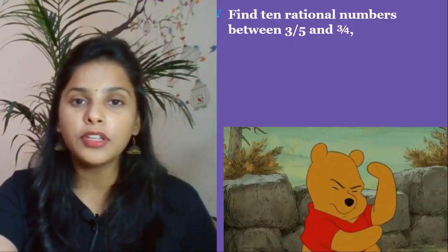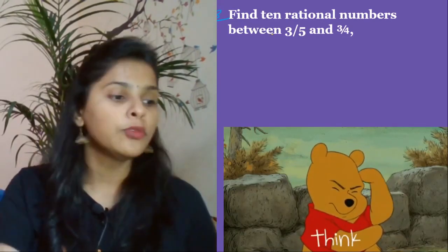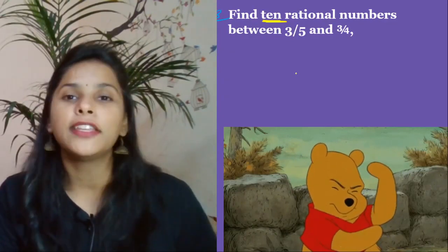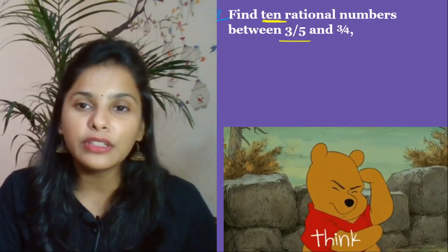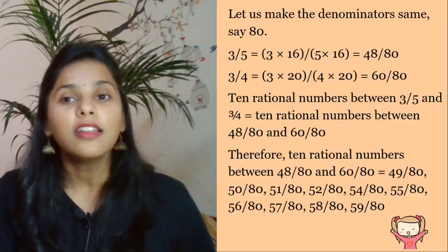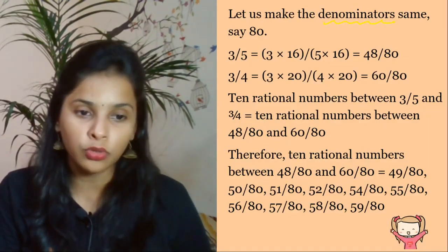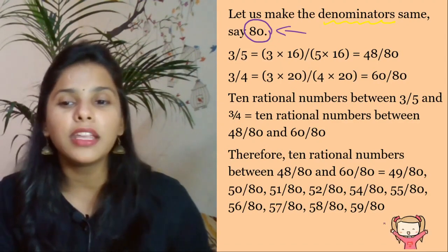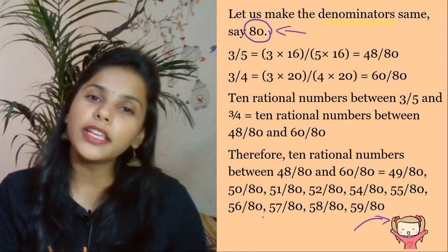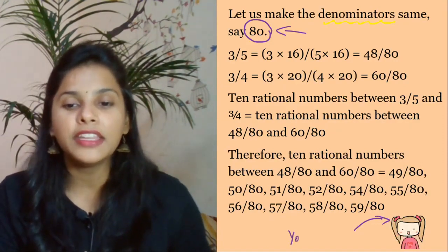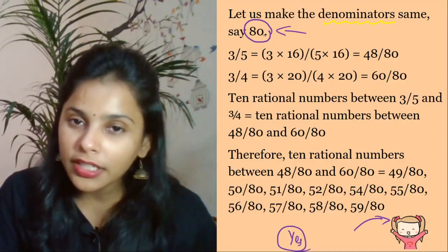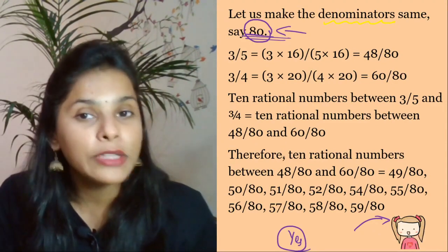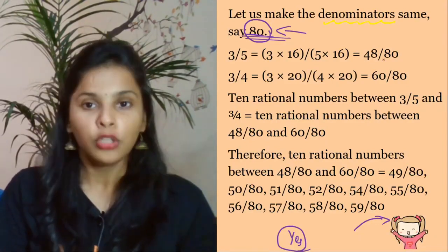Question number 3 — let's boom it! Find 10 rational numbers between 3/5 and 3/4. You are an intelligent pirate, so this is similar to the previous question. Again, make the denominators equal first. We choose denominator 80. You can take the LCM, but choosing a larger denominator makes it easier to find more rational numbers.